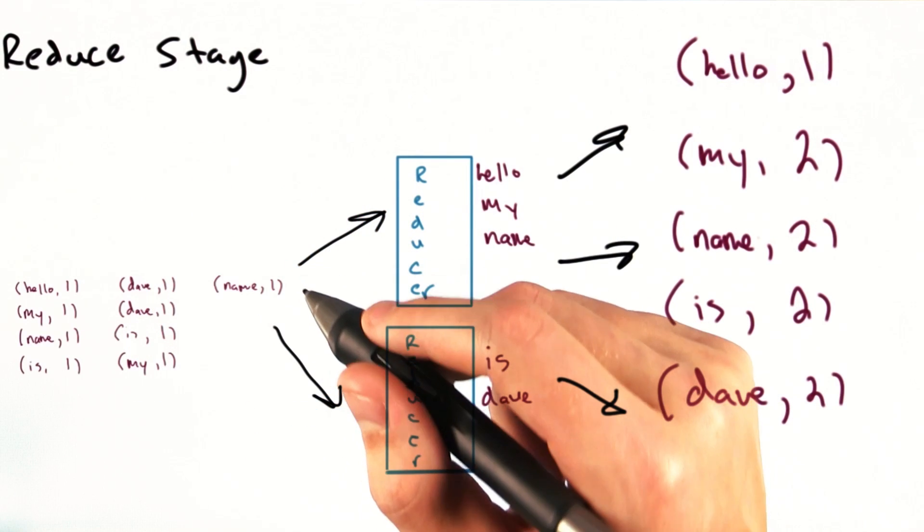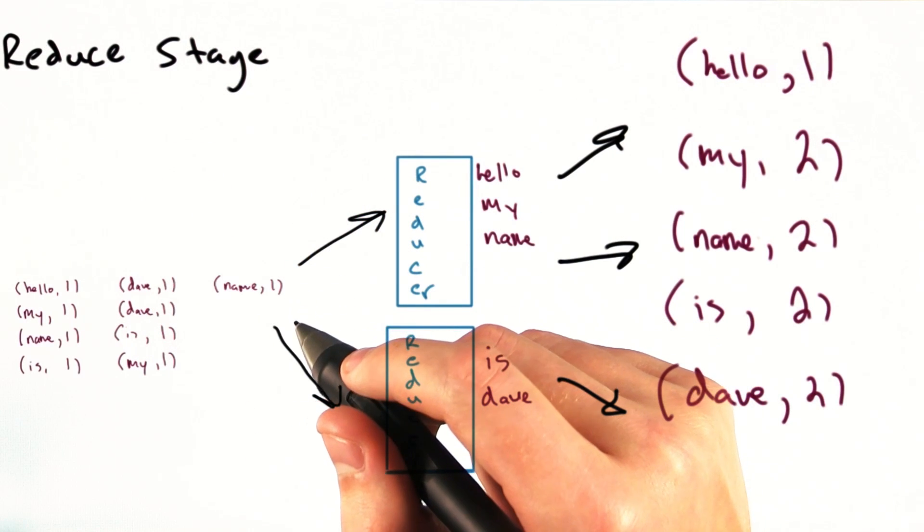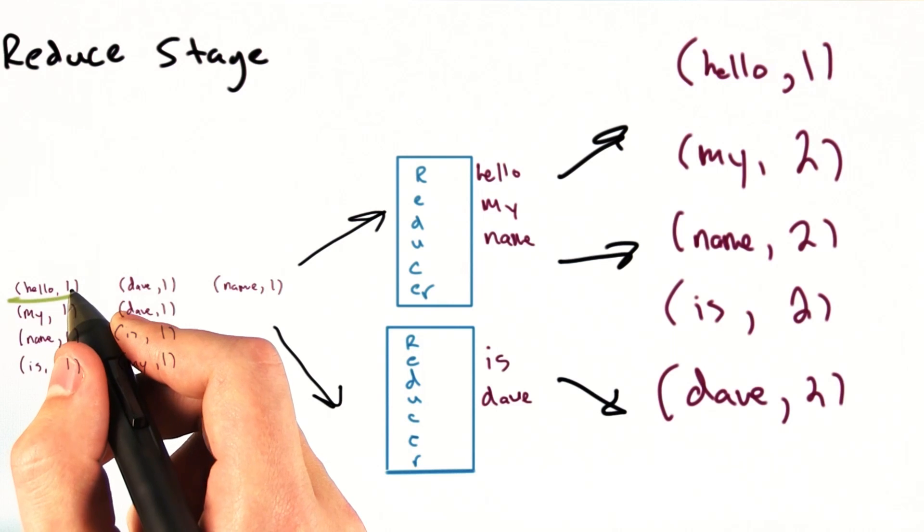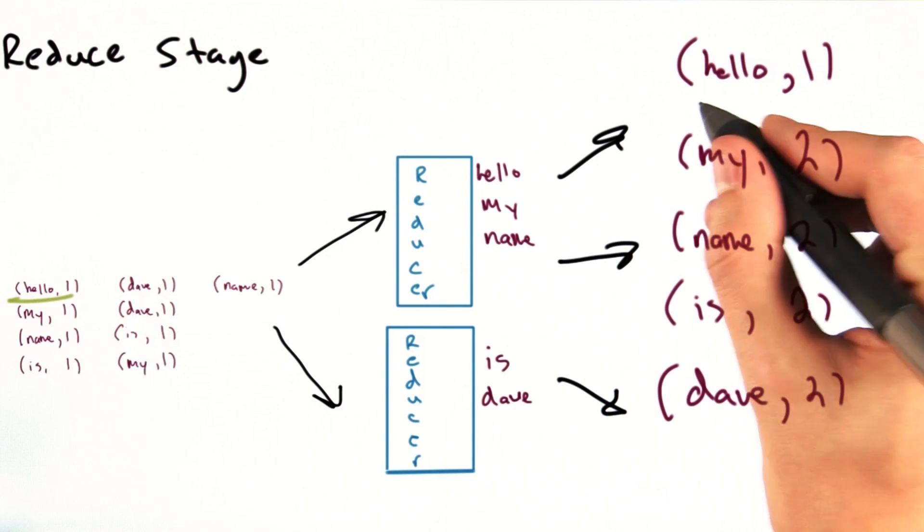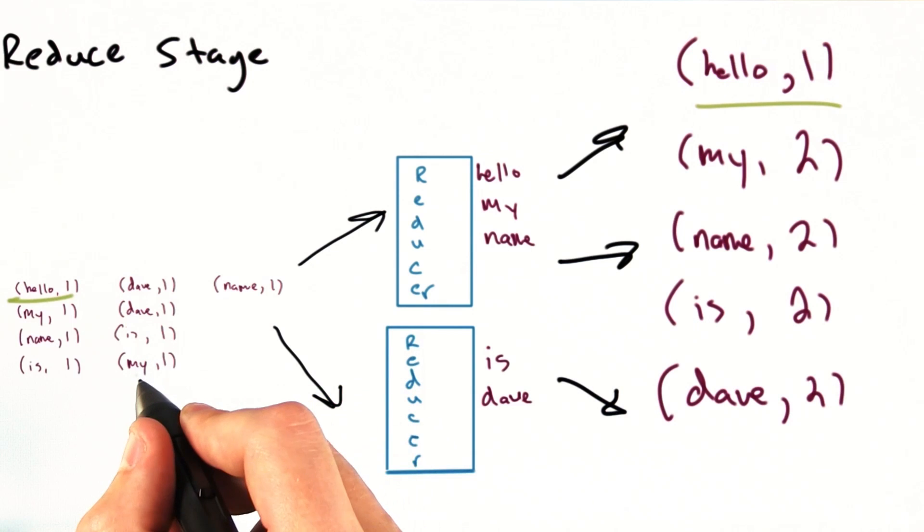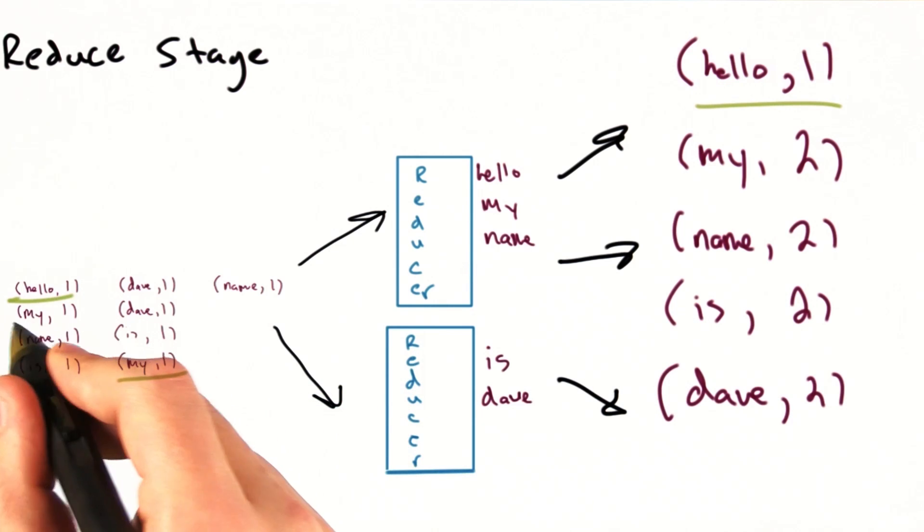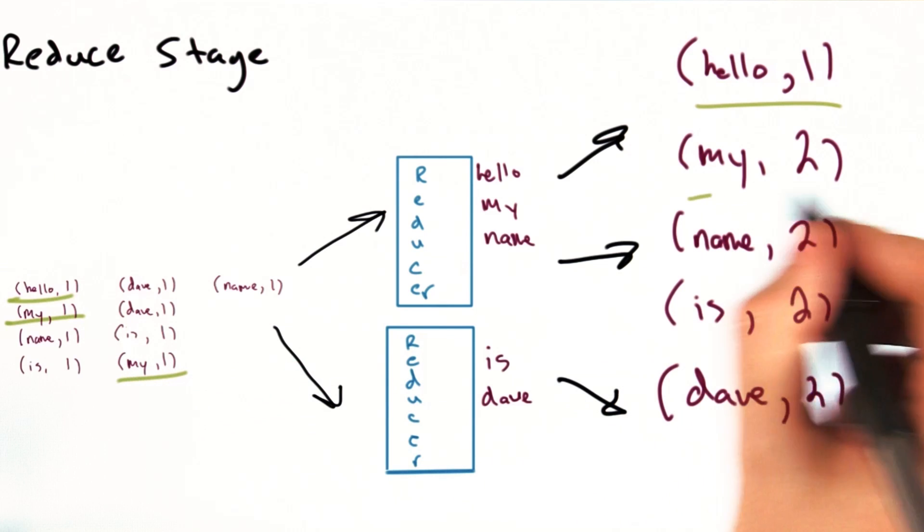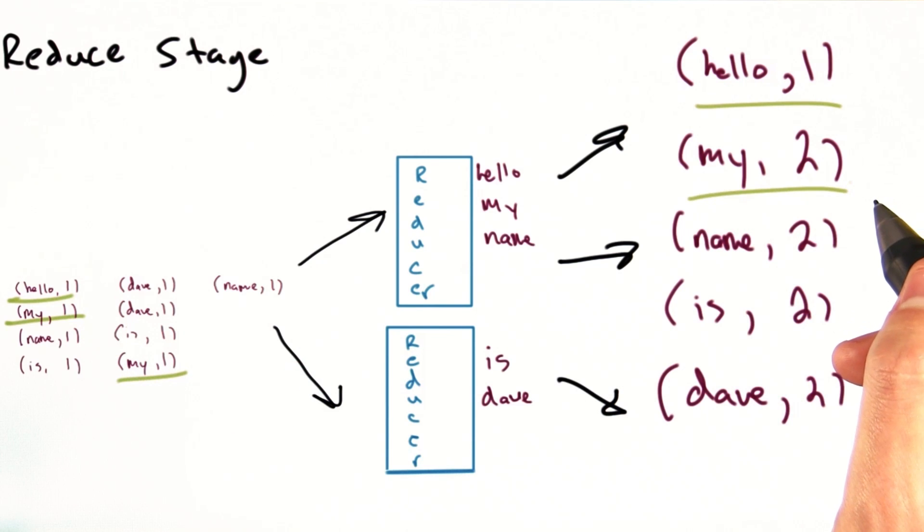So, say that we ran this reducer on all of the intermediate key value pairs our mapper in the previous slide produced. We would go through all key value pairs with the key hello. There's only one, so we emit hello one. There are, however, two key value pairs with the key my. So, we would emit the final key value pair my two for this key, and so on.